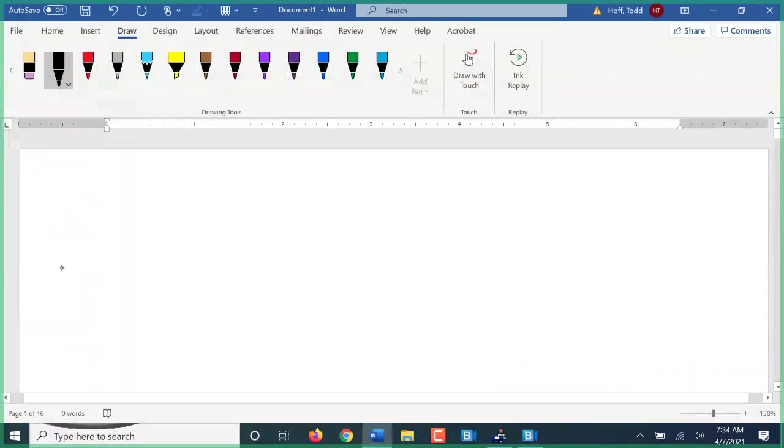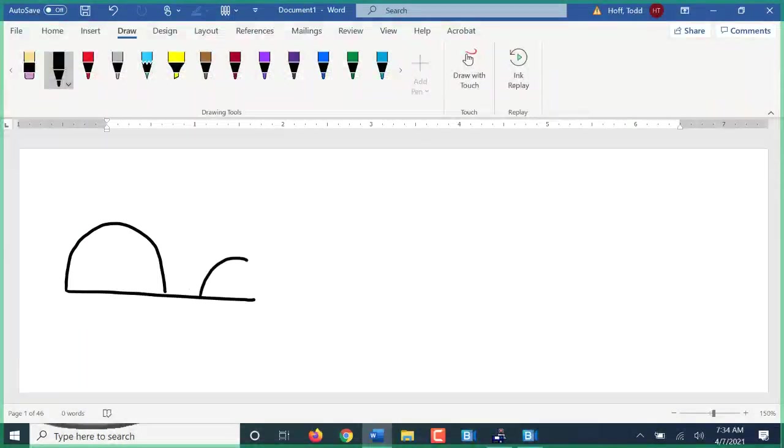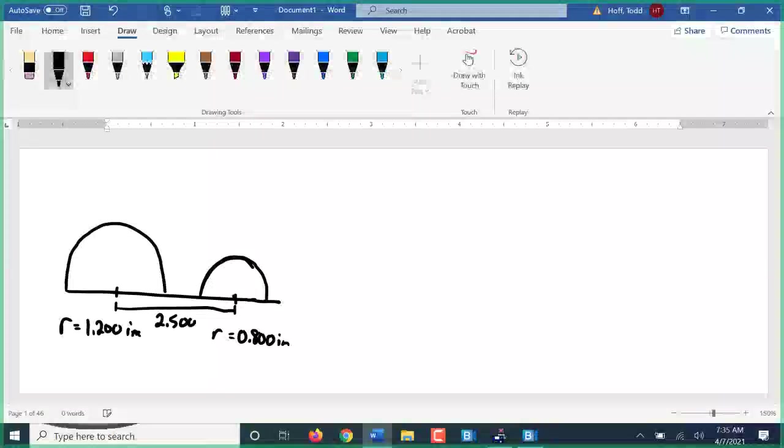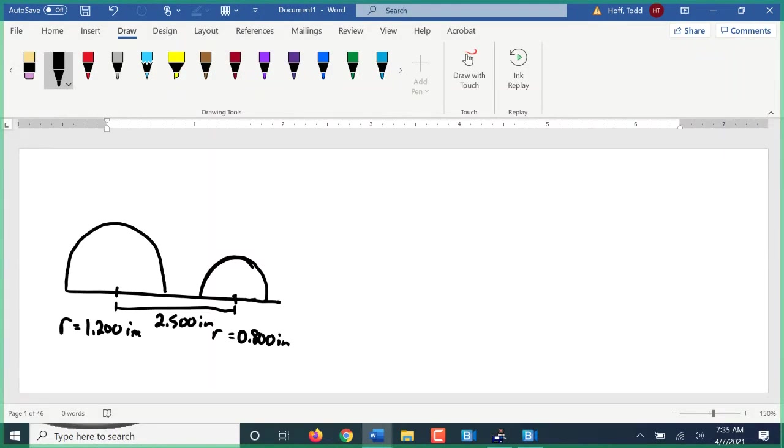So to continue on from what we did yesterday, we're looking at using trig to find missing pieces. We're going to pretend these look like half circles, which they sort of do. This circle here has a radius of 1.2 inches, and this circle here has a radius of 0.8 inches. I want to know what is this distance, x, and I want to know the area.